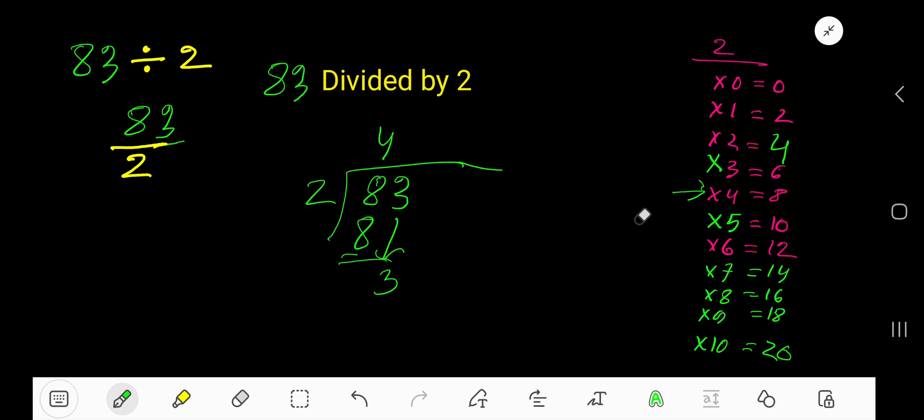2 goes into 3 how many times? 2 goes into 4 two times, so 1 time. Write 1. 1 times 2 is 2, subtract to get 1. So 41 remainder 1, this is the answer.